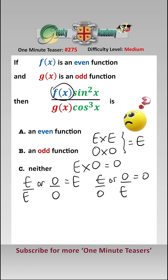We know that f(x) is an even function. Sine of x is an odd function, so sine squared of x is therefore an even function.